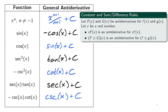Since the derivative of a sum is the sum of the derivatives, the antiderivative of a sum is the sum of the antiderivatives. Similarly, the antiderivative of a constant multiple is the constant multiple of the antiderivative.